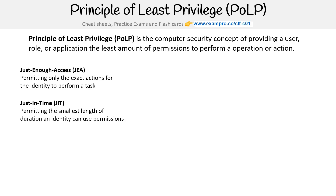Then we have Just in Time — JIT — permitting the smallest length of duration an identity can use a permission. Usually when talking about PULP, the focus is on JEA, but these days there is a larger focus on JIT as well.